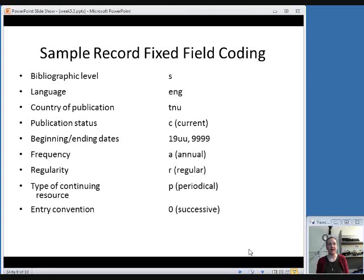The beginning and ending dates, you'll notice the last two dates for the beginning date is UU. That means unknown. We know it was published in the 20th century sometime, but we don't know when. So, you should make your best guess and put in as much as you can determine of that.